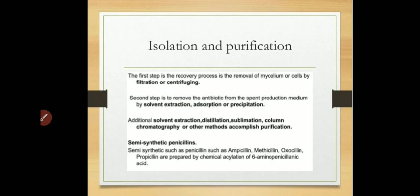Other semi-synthetic penicillins such as ampicillin, methicillin, oxacillin, and propicillin are prepared by chemical acylation of 6-aminopenicillanic acid (6-APA).